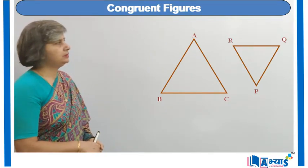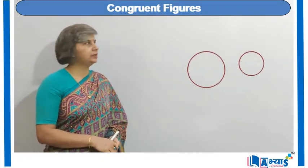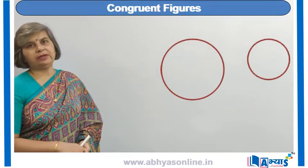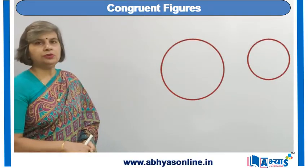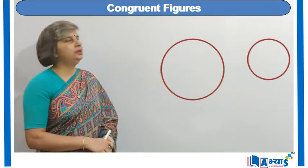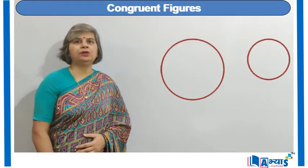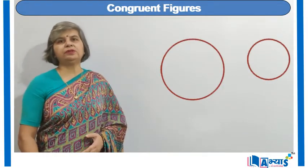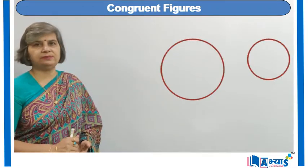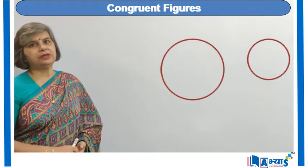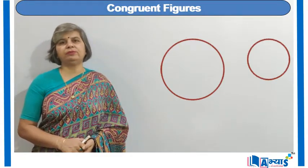If we try to cut one triangle and place it on the other, it will not overlap it completely — this is an example of non-congruent figures. Similarly, if we have two circles with different radii and we try to superimpose them, they will not overlap completely, so the two circles are not congruent. Whenever two figures are congruent, they are of the same shape and same size; if non-congruent, they are of different shape or different size.